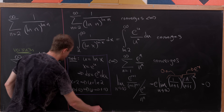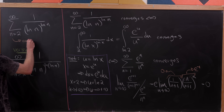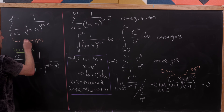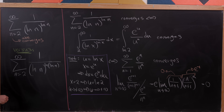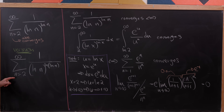So what we've shown is that this first series converges — it's a series of positive terms, so absolute convergence doesn't add anything further. And since I said that one converged and one diverged, that means the other series diverges. But let's see how we can show that.